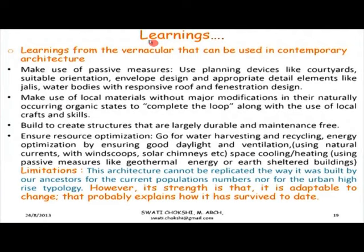What are the learnings? Make use of passive measures like orientation, envelope design, and facade engineering at the first level, followed by active measures. Use local materials as unprocessed as possible to complete the loop, and use local skills as well. Consider life cycle performance and costing to build durable and maintenance-free structures. Resource optimization for water and energy is an absolute must, with focus especially on space heating and cooling, light and ventilation. However, we cannot continue to build exactly like our ancestors because population numbers are huge and typologies are often high-rise. But conceptual ideas can surely be taken ahead.